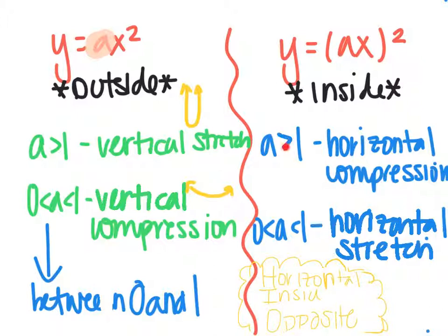And if a is greater than 1, so if a is 4, 5, 6, or 7, that's going to be a horizontal compression. And if a is between 0 and 1, it's going to be a horizontal stretch.